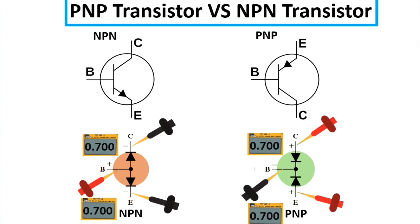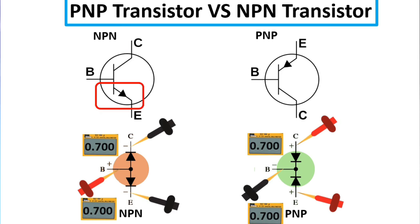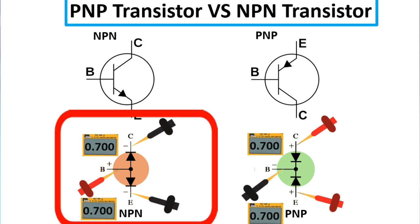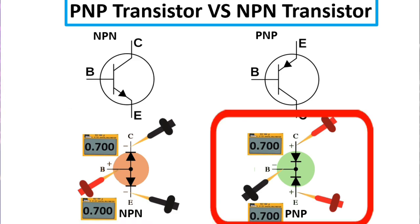To summarize: for NPN transistor the arrow points toward the emitter, and for PNP transistor the arrow is toward the base. To test NPN, you get a reading when you put the red probe in the base and the black probe once in the collector and once in the emitter. For PNP, you get a reading when you put the black probe in the base and the red probe in the collector and emitter.